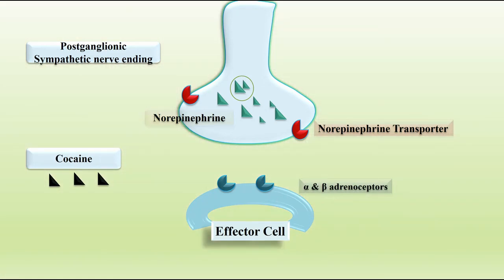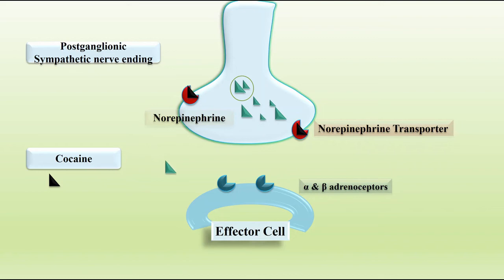Cocaine has the ability to block the norepinephrine transporter. Thus, it prevents further re-uptake of norepinephrine into the synaptic vesicle, and more norepinephrine is available at the synaptic cleft to produce its effects. As cocaine also does not directly act on the receptors, therefore cocaine is also an indirect acting drug.